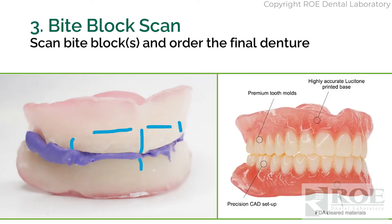Which brings us to number three: bite block. Let's say you completed step two and we send you a bite block. At this point, follow traditional methods — high smile line, mid line, cuspid lines. Use an actual knife to cut these in grooves so they can be clearly seen when scanned in the software, as opposed to using a marker. Mold the wax as normal for lip support and carve the wax, if possible, for a plane of occlusion. Spend some time on this part of the process so that we can go right to a final denture. 95-plus percent of bite blocks that are scanned go right to final dentures — we skip the setup. That's another wonderful thing about digital.